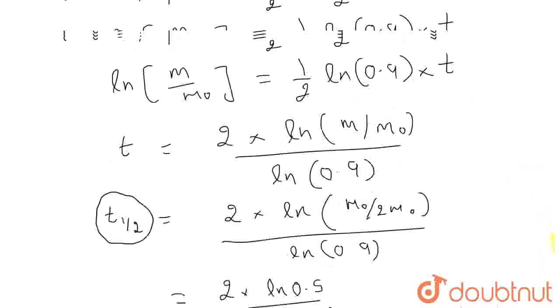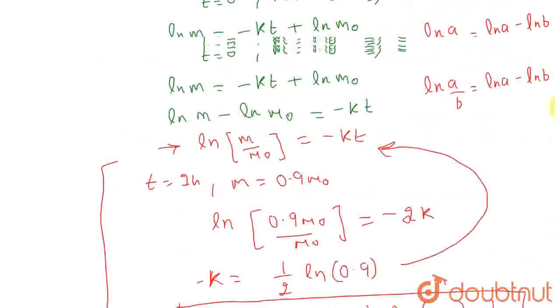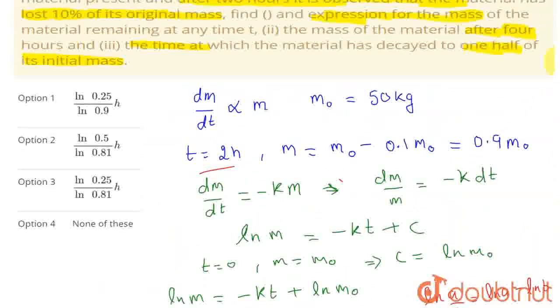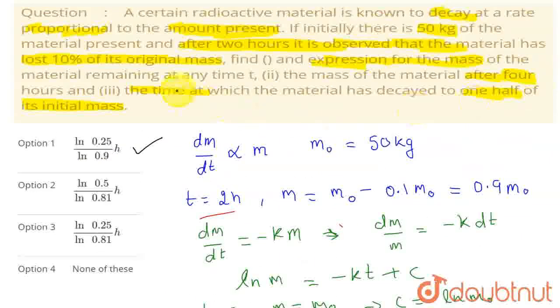If we match our options, option 1 is correct: ln(0.25) upon ln(0.9). So we have solved all three parts.